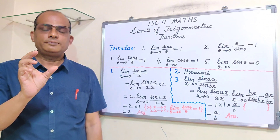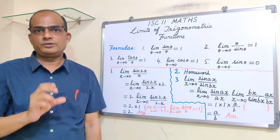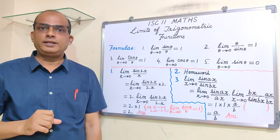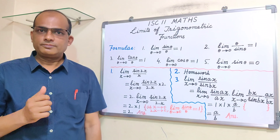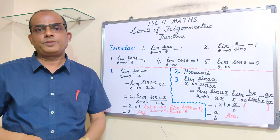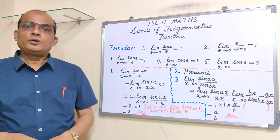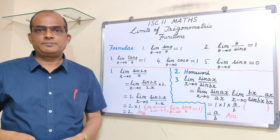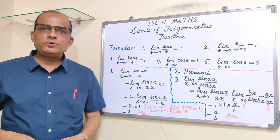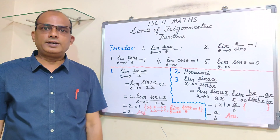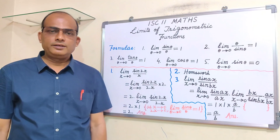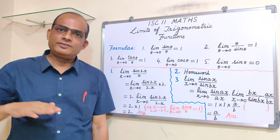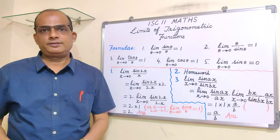Two Urdu words: 'surkh roo' means success/honor, and 'heena' means mehndi. The poet says: a person gains honor after stumbling, and heena shows its color only after being rubbed on stone.